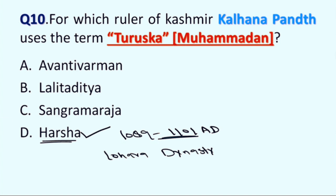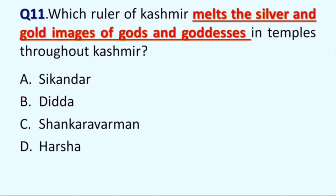Next question is: which ruler of Kashmir melted the silver and gold images of gods and goddesses in temples throughout Kashmir? Option A: Sikandar, B: Didda, C: Sankara Varman, and D: Harsha. Correct answer is Option D, Harsha.